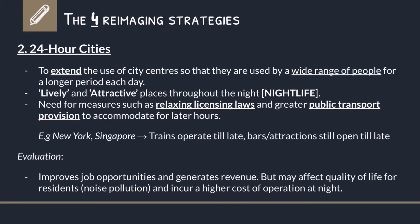The next strategy is 24-hour cities. As the name suggests, the city runs for 24 hours. This strategy aims to extend the use of the city such that more people can enjoy it — city attractions run both in the day and in the night, hence a nightlife. Singapore and New York are examples of cities with a very strong nightlife. To achieve this, the government needs to implement certain things, such as relaxing licensing laws that govern companies, and providing greater public transport so people can get home after being out at night.